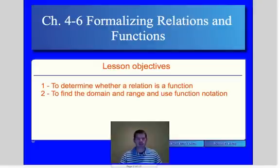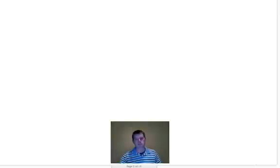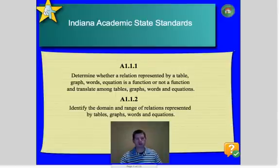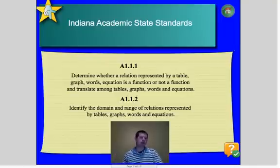The first objective is to determine whether a relation is a function, and then we're going to talk about domain and range and function notation. Our standards are A1.1.1 and A1.1.2, which is basically representing data through charts and graphs and words, and then identifying range and domain functions.